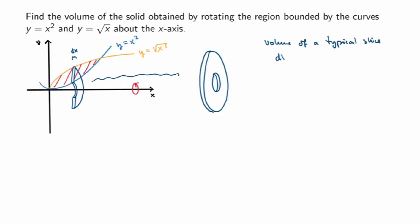I'll call the volume of a typical slice dv. I know that the width is dx, so the volume will be given by the area of the slice times the width dx. The area here is the area of the surface of my typical washer slice.